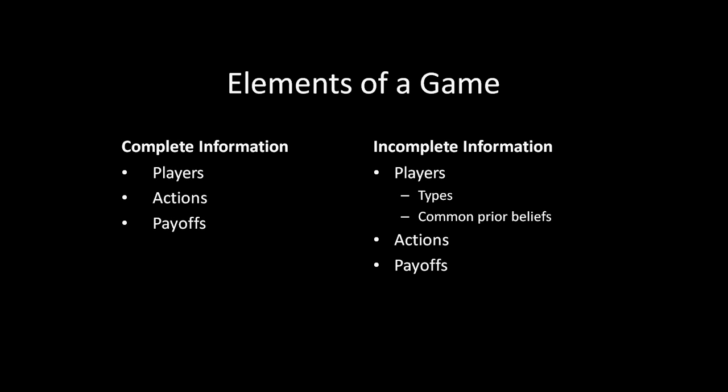Nevertheless, these games of incomplete information still have actions and they still have payoffs, but the payoffs are now a function of the types of the players. So the big difference between incomplete information and complete information is these types and the beliefs about these types. Consequently, Bayesian Nash Equilibrium is going to differ from Nash Equilibrium because of these types.